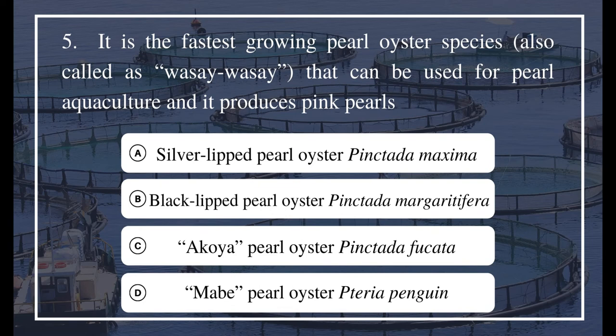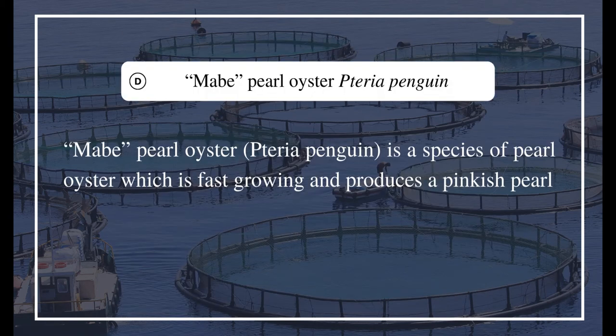Question 5: It is the fastest growing pearl oyster species, also called 'Wasu-wasiti,' that can be used for pearl aquaculture and produces pink pearls. Options: a) Silver-lipped pearl oyster Pinctada maxima, b) Black-lipped pearl oyster Pinctada margaritifera, c) Akoya pearl oyster Pinctada fucata, d) Mabe pearl oyster Pteria penguin. The answer is D, Mabe pearl oyster Pteria penguin. Pteria penguin is a species of pearl oyster which is fast growing and produces a pinkish pearl.